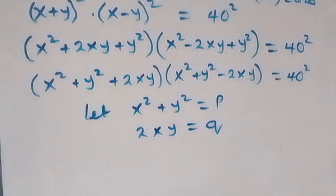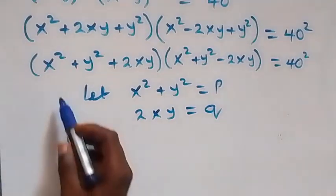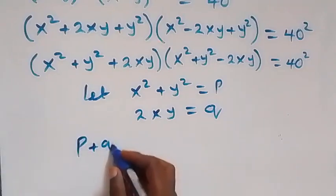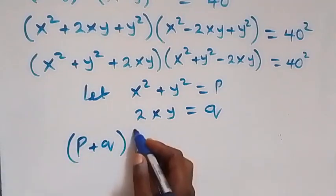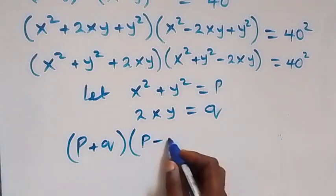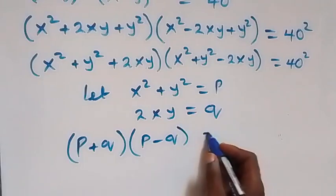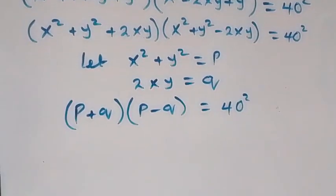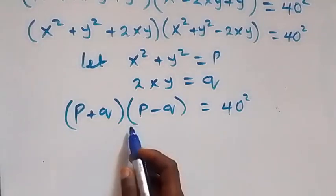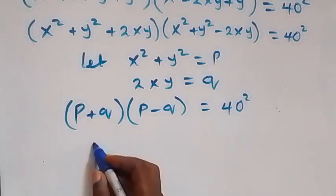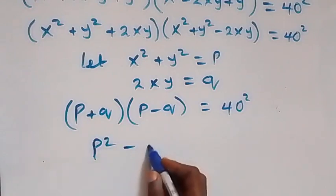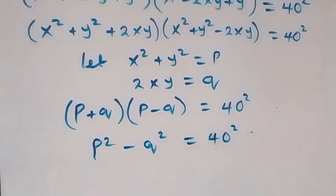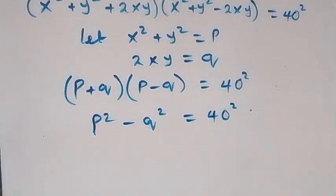We can write this equation in terms of p and q as (p plus q) times (p minus q) equals 40 squared. This is the difference of two squares, which gives p squared minus q squared equals 40 squared.